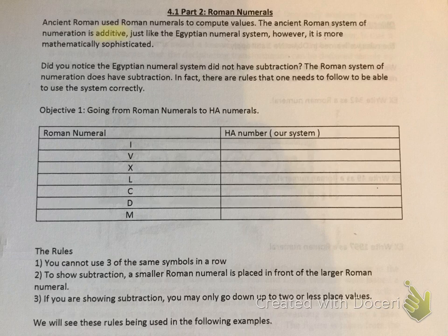Objective 1: Going from Roman numerals to Hindu-Arabic numerals. Just a reminder, Hindu-Arabic is our numeral system. The Roman numeral I is 1, V is 5, X is 10, L is 50, C is 100, D is 500, and M is 1,000.